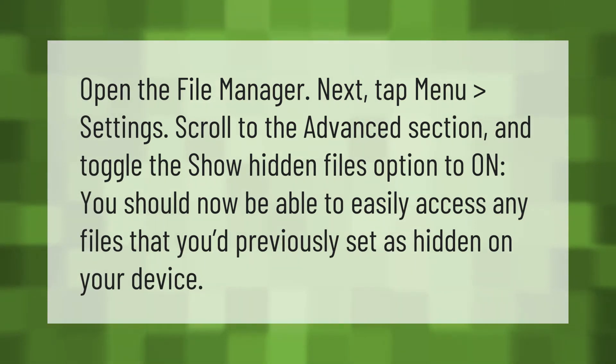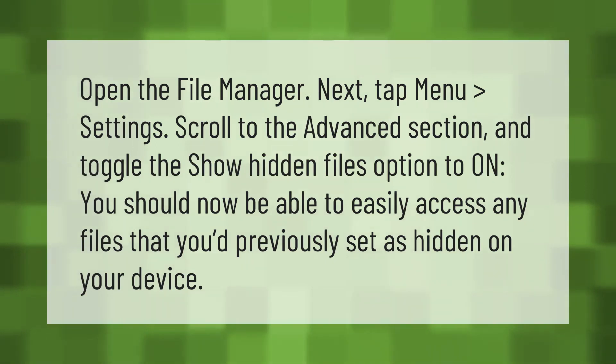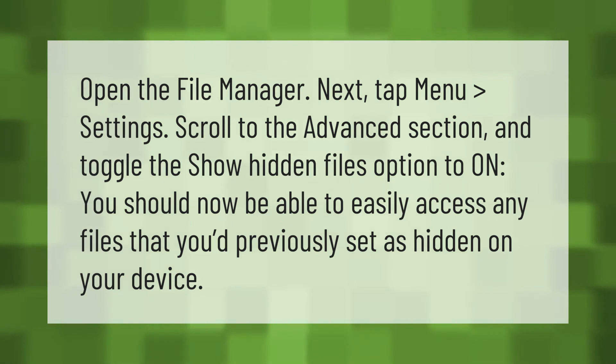Open the File Manager, then tap Menu, then Settings. Scroll to the Advanced section and toggle the 'Show hidden files' option to on. You should now be able to easily access any files that you'd previously set as hidden on your device.